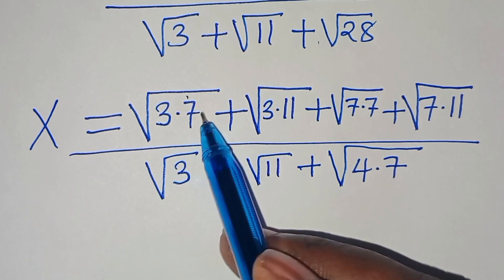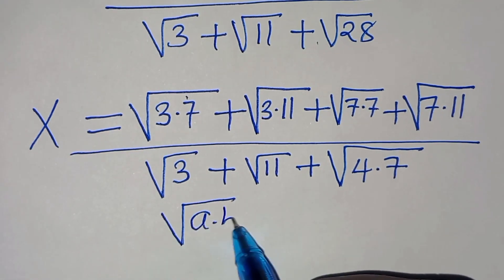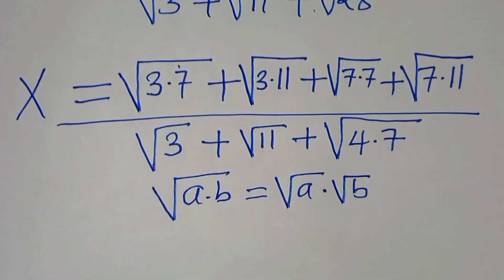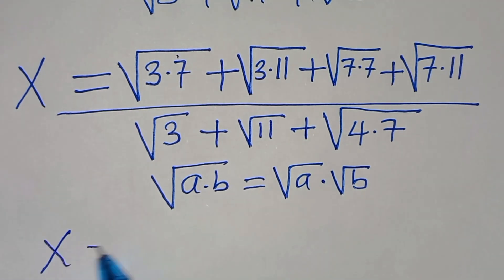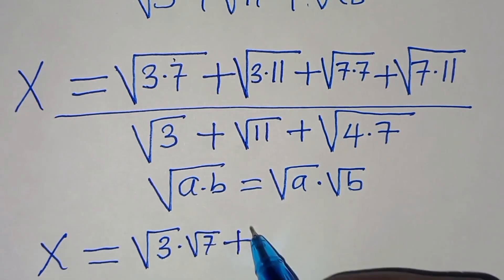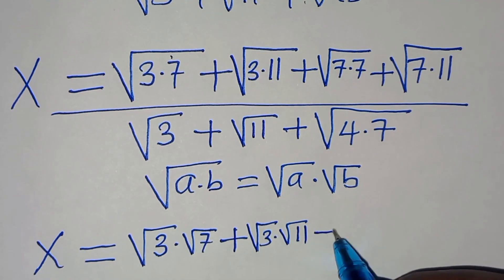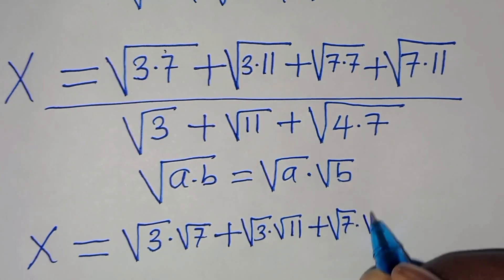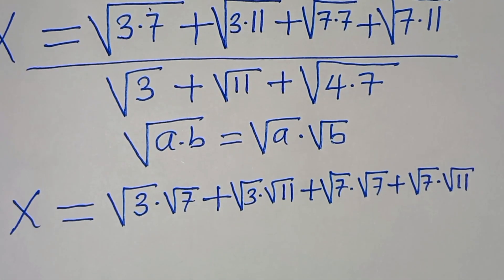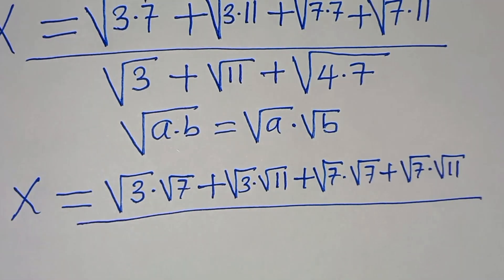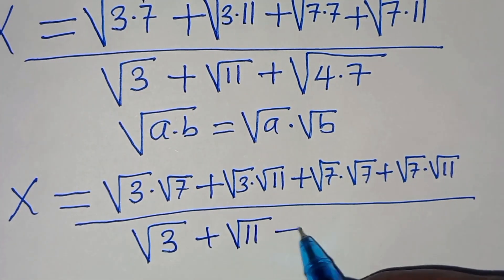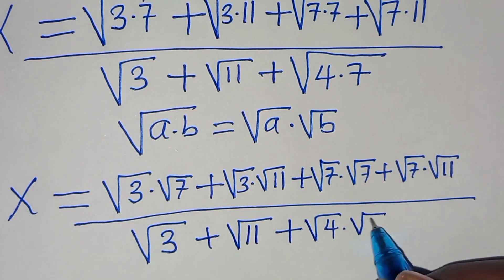The next step: square root of 3 times 7 is in the form of square root of A multiplied by B, which we can express as square root of A times square root of B. Applying this property, x equals square root of 3 multiplied by square root of 7, plus square root of 3 multiplied by square root of 11, plus square root of 7 multiplied by square root of 7, plus square root of 7 multiplied by square root of 11, all divided by square root of 3 plus square root of 11, plus square root of 4 multiplied by square root of 7.